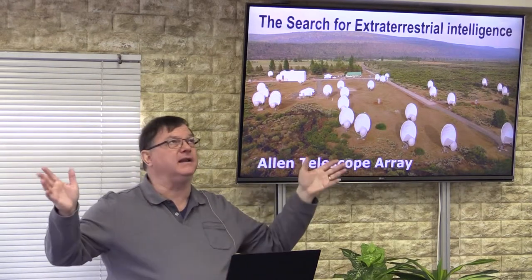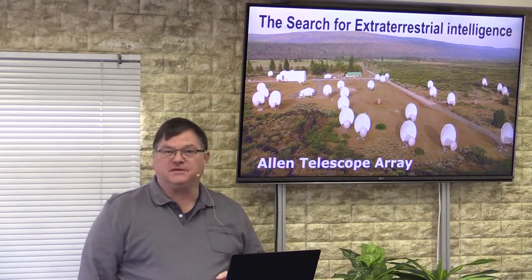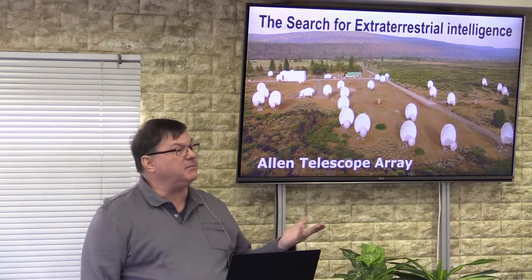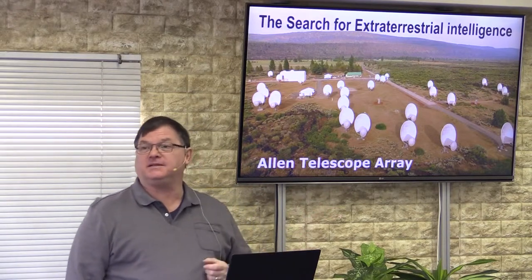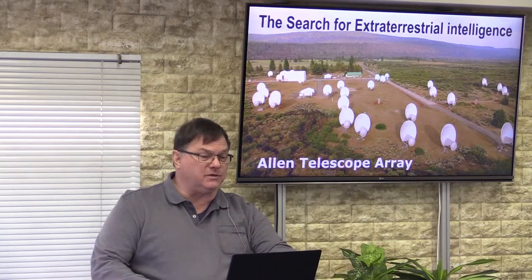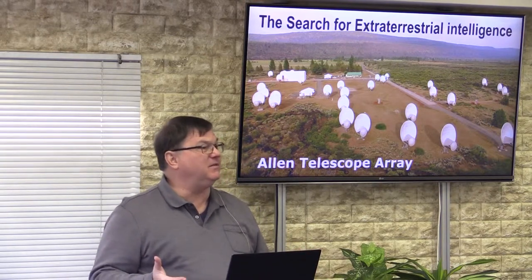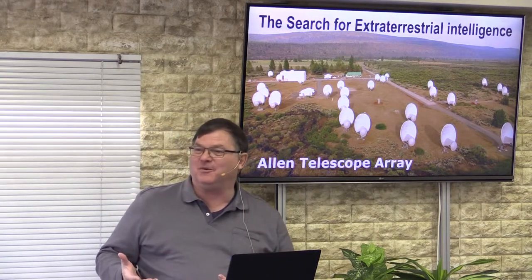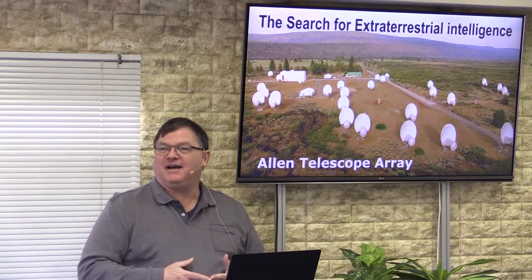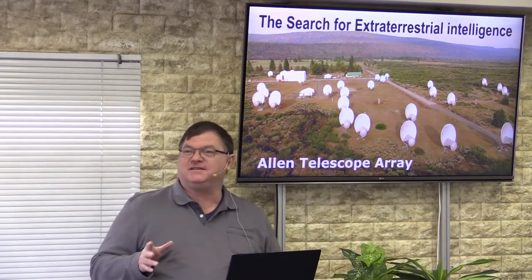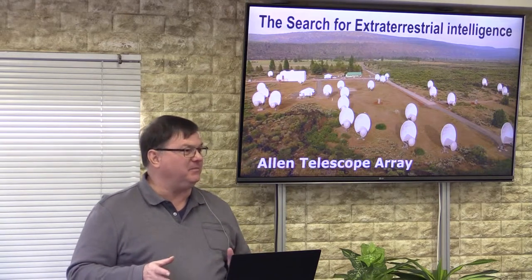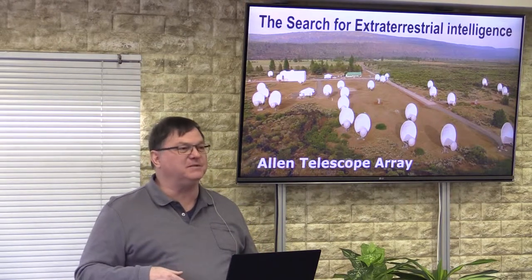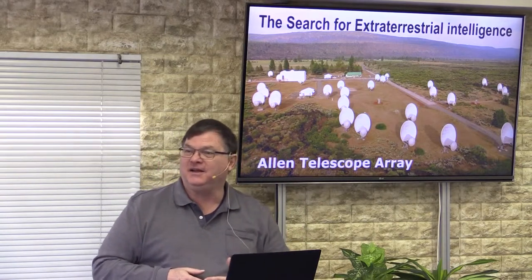The search for extraterrestrial intelligence has become very exciting because suddenly they've got all these planets to look at. Before, all they could do was look up at the big sky and pick stars more or less at random, looking to see if they could find some sort of signal produced by intelligent beings. Now they can point at stars they know have planets and look. Some of our scientists say we shouldn't be looking for them — we should be hiding because they're probably going to be hostile. Other people say no, they're probably friendly.